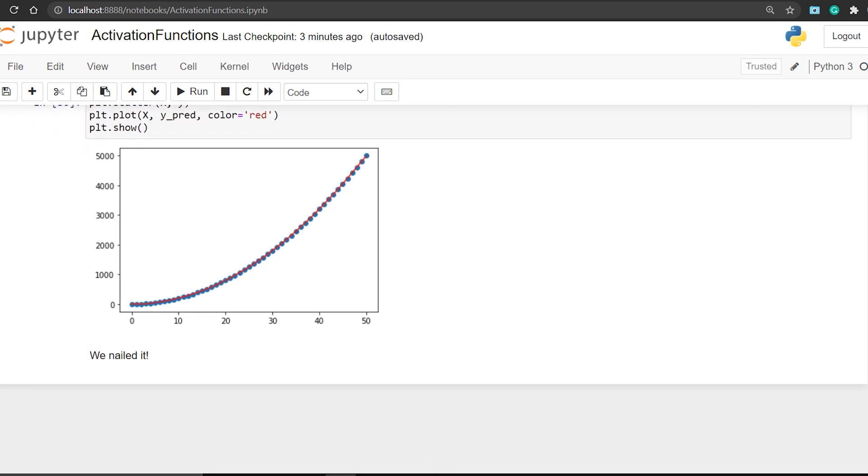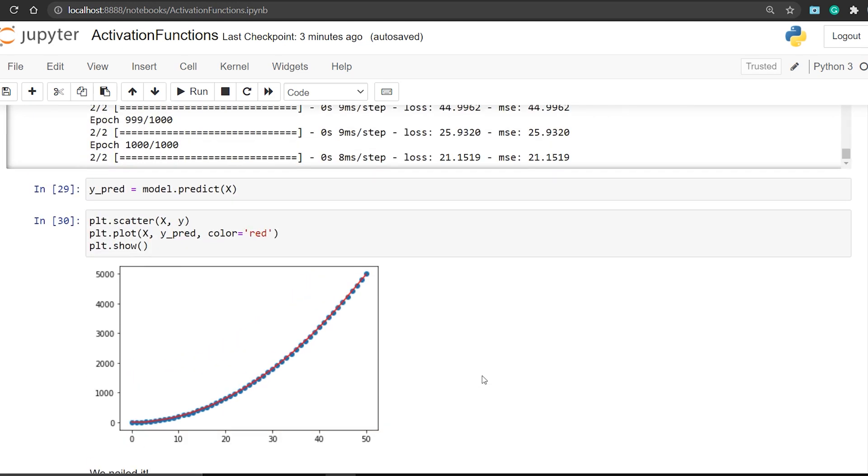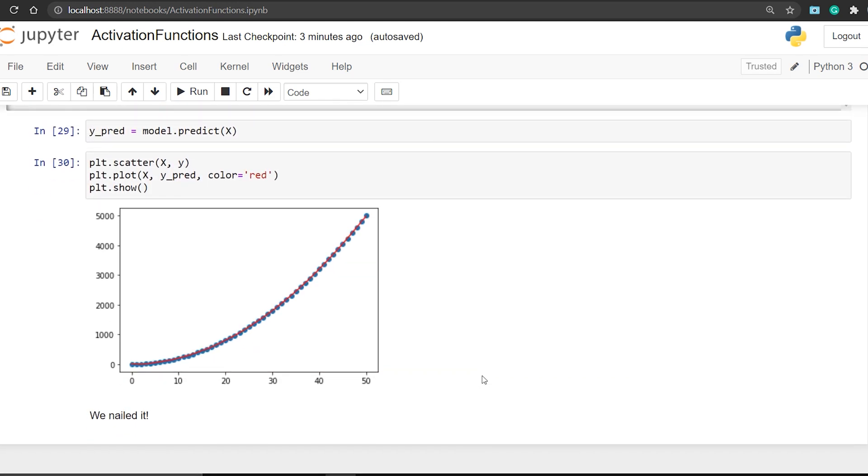But when we use activation functions, you can see this activation equals relu thing here, something happens and our line fits the data. Now it has curved with the data as well as it could. So this was the power of activation functions.